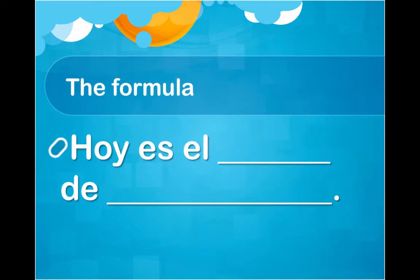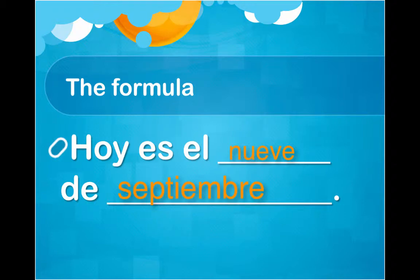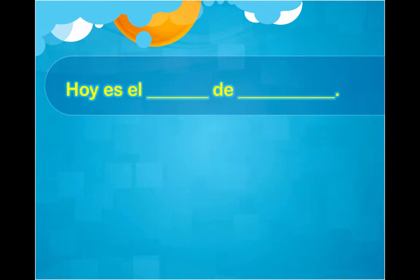September. So if you're a mathy person, here's a formula: 'hoy es el' means 'today is the.' In the first blank you're going to put the number of the day. 'De' means 'of,' and in the second blank you are going to put the name of the month in Spanish.